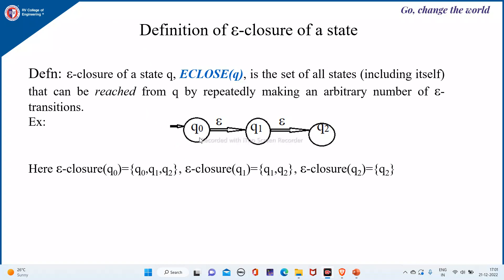For example, let the transition diagram be as below. For Q0, the state itself will belong to the epsilon closure. So Q0 will be included in the epsilon closure of Q0. I have an explicit transition from Q0 to Q1 on epsilon, so Q1 also belongs to the epsilon closure of Q0. From Q1, again on epsilon, I can make a transition to Q2. So Q2 also belongs to the epsilon closure of Q0. Likewise, epsilon closure of Q1 is {Q1, Q2} and epsilon closure of Q2 is Q2 itself.